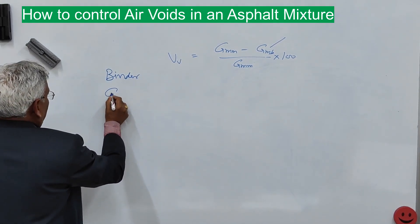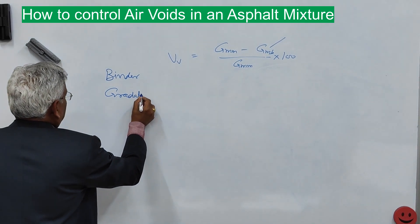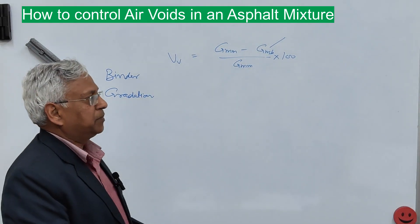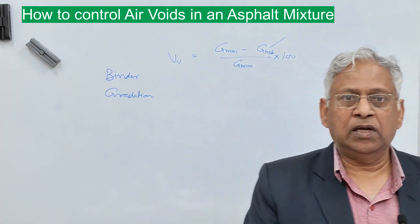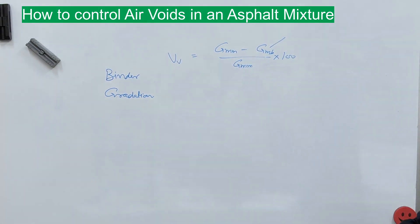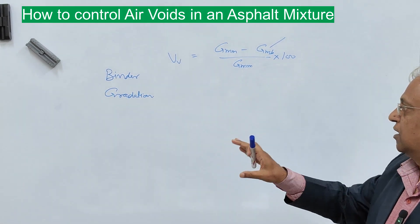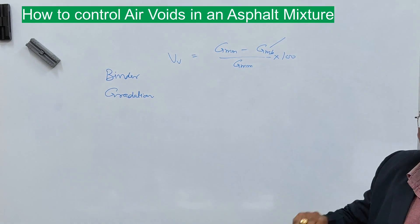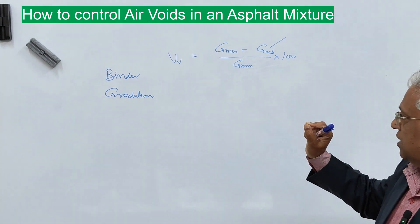You can change air voids either by a change of binder content or by a change of aggregate gradation. Since the job mix formula is prepared through aggregate and binder only, you have only these two options: either change the binder content in the mix or change the gradation.